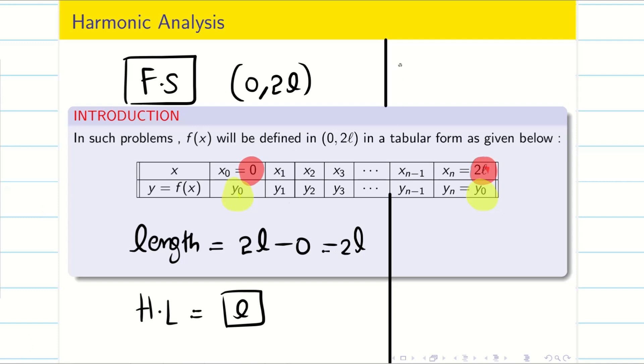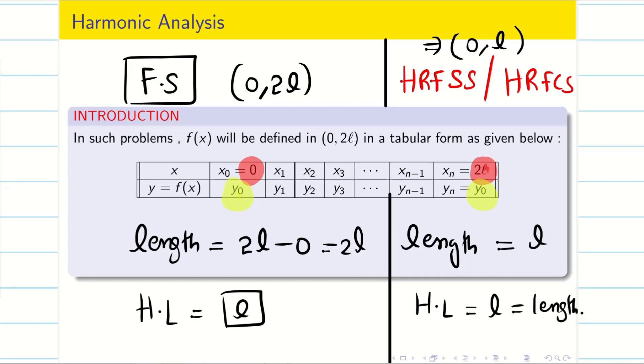Now, in this session, we are considering half-range Fourier sine series or half-range Fourier cosine series. Here, the interval is going to be 0, l because it is half-range. Already, it is 0, l. So, when you find the length, it is going to be l. And here, my half length and my length are going to be same. That is the only different students.